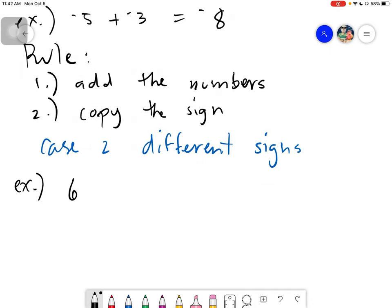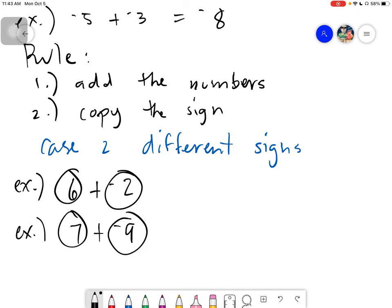So, we will have say 6 plus negative 2. Or, we will have 7 plus negative 9. So, the negative can be anywhere, as long as the signs are different. This one is positive and negative. Positive and negative.